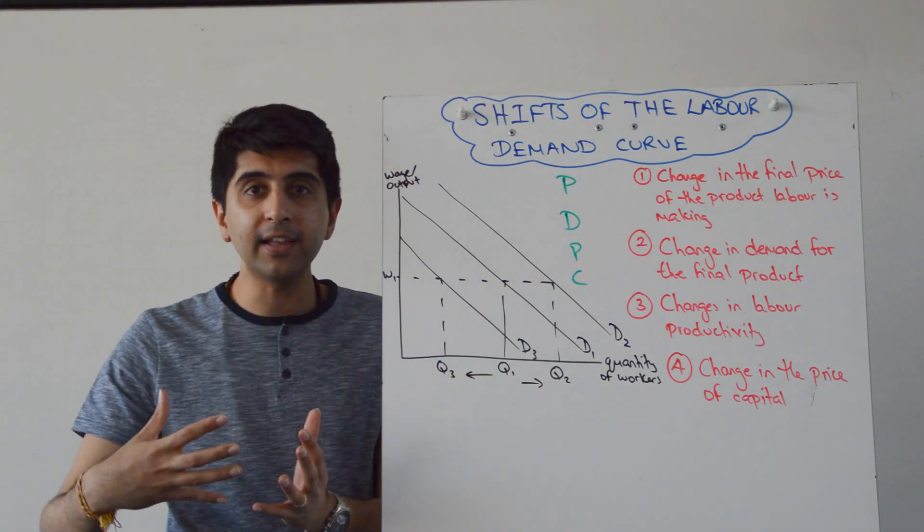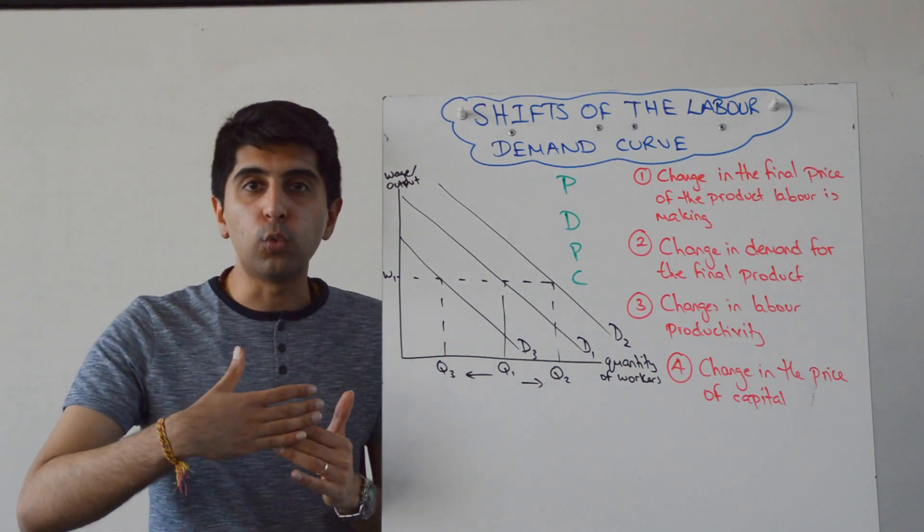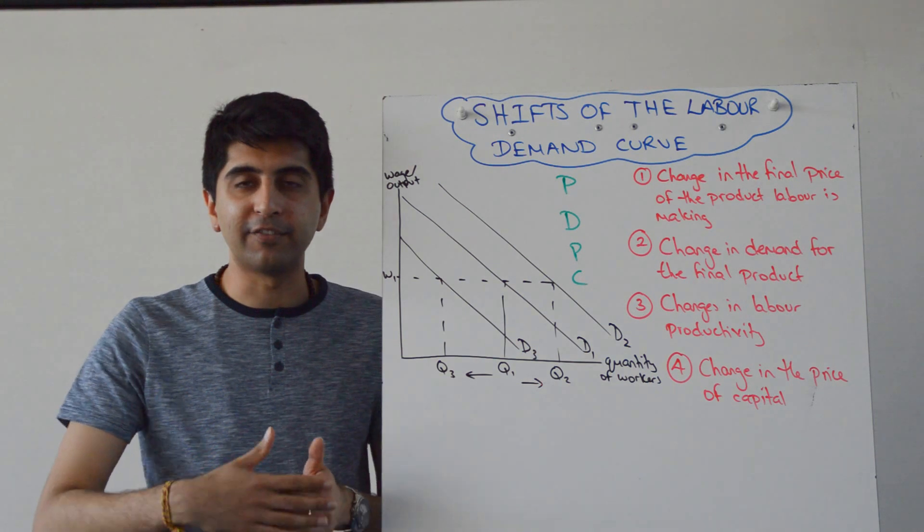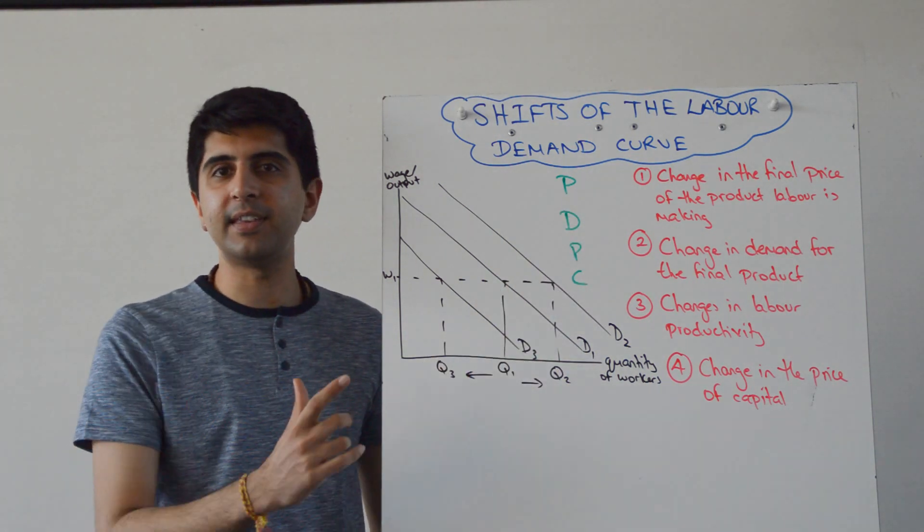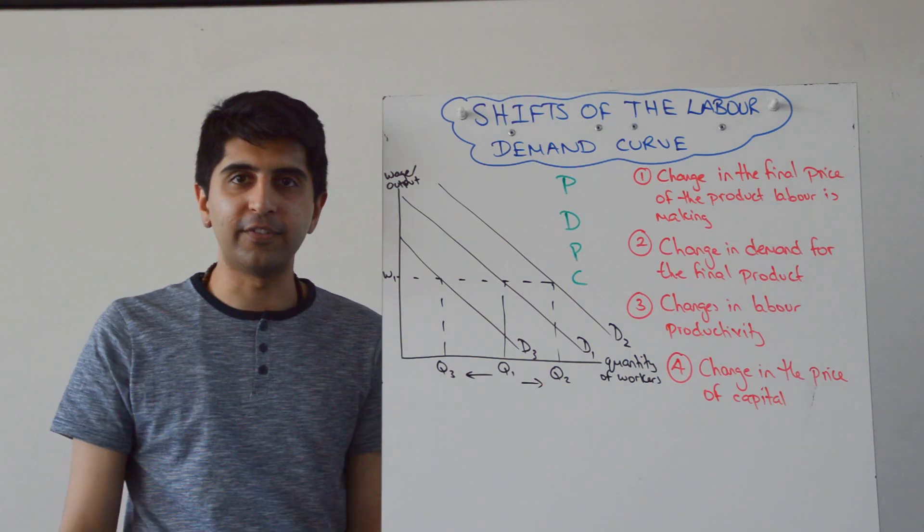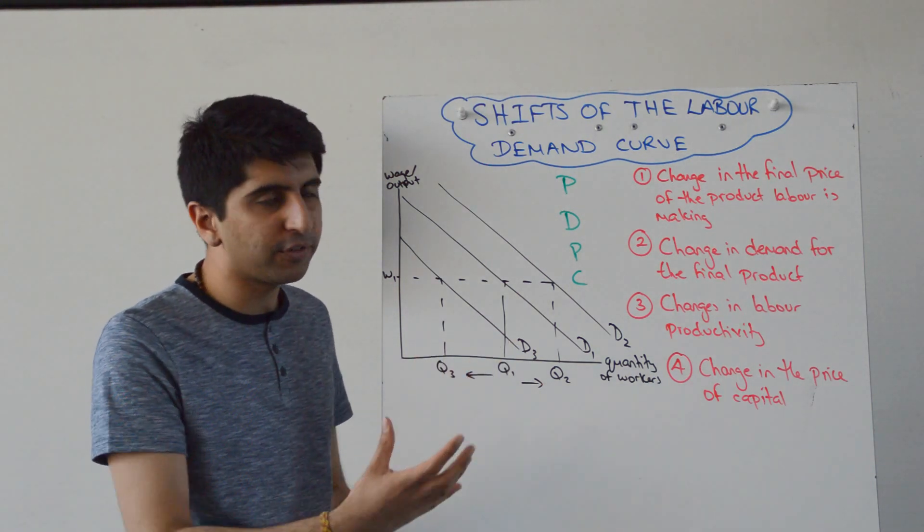Other than the wage, anything else that affects demand for labour will shift the labour demand curve, either left or right. Just think PDPC. PDPC are all the shifters of the labour demand curve.